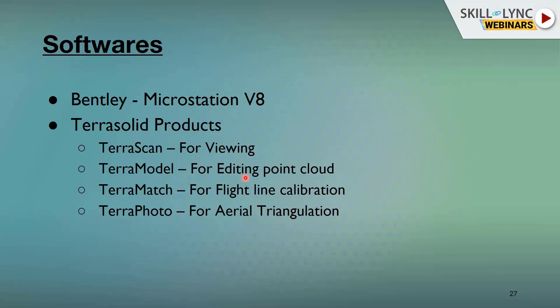TerraModel is used for editing point cloud data. Point cloud data may start with only one default class, and TerraModel allows you to classify it into different classes such as low, medium, and high vegetation, settlements, buildings, power lines, and roads.